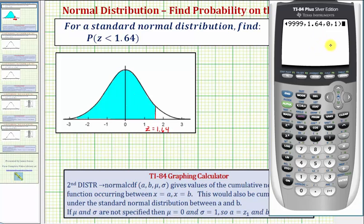And this pastes all the information to the home screen. If we scroll to the far left, notice how we do have the normal CDF command, then the lower bound z-score, upper bound z-score, mu and sigma. So if we press enter, this will give us the area to the left of z equals 1.64.